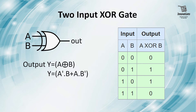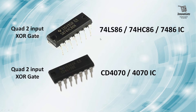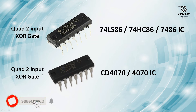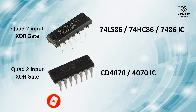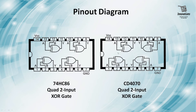We will implement this using two ICs — one is TTL series IC and one is CMOS series IC. The TTL series IC is 74LS86 or 7486 IC and the CMOS series IC is CD4070. Both of these are Quad 2-input XOR gates, meaning each IC has 4 independent 2-input XOR gates.